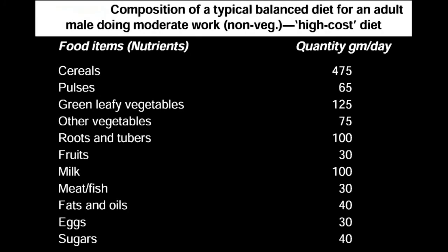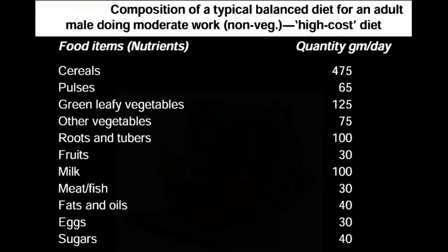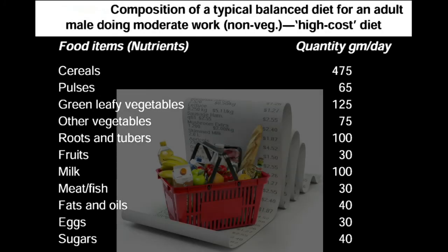This table shows the balanced diet for a non-vegetarian adult man who comes under the moderate work group. This diet provides approximately 2800 calories and about 75 grams of protein.